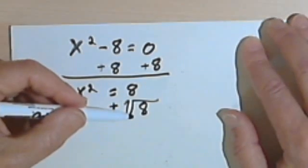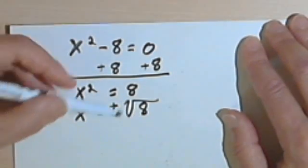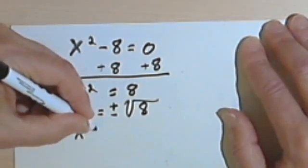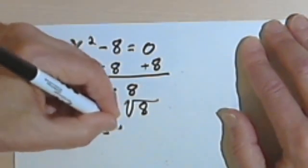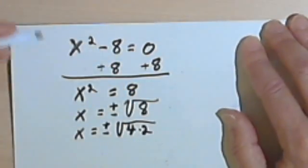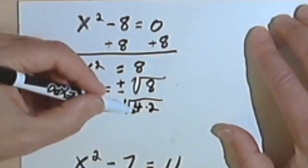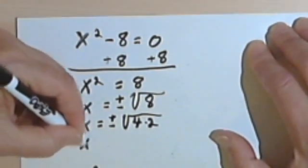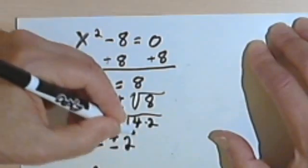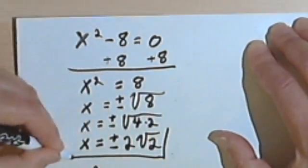Now we're not done because we have to simplify this radical. And I know that 8 is 4 times 2, and 4 is a perfect square. So I'll have x equals plus or minus the square root of 4 times 2. And then I'll just pull out the square root of 4. So I'll have x equals plus or minus 2 times the square root of 2.